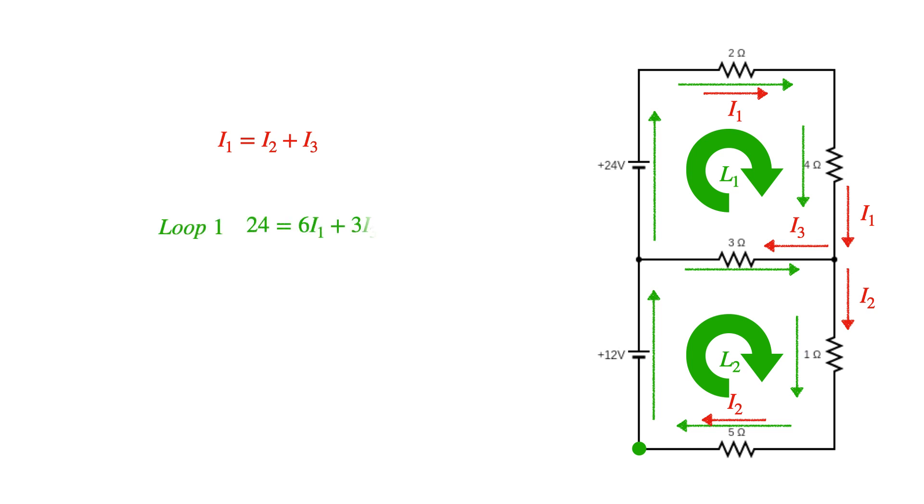For loop one, I have 24 volts equals 6I1 plus 3I3. And for loop two, I have 12 volts equals 6I2 minus 3I3. So now I have three equations with three unknowns. I can begin to use systems of equations to solve for the currents.